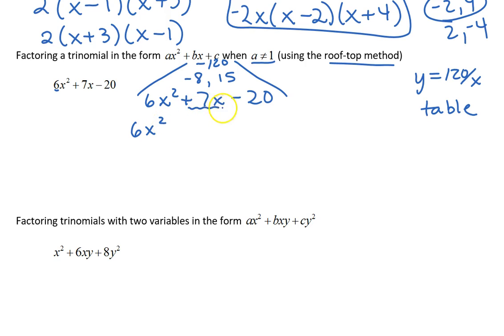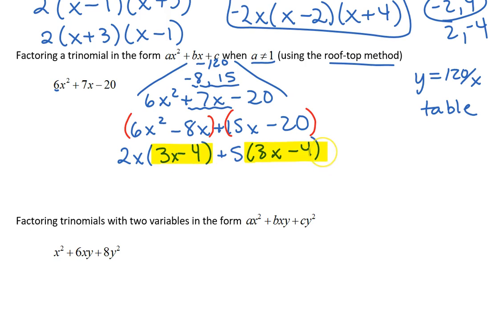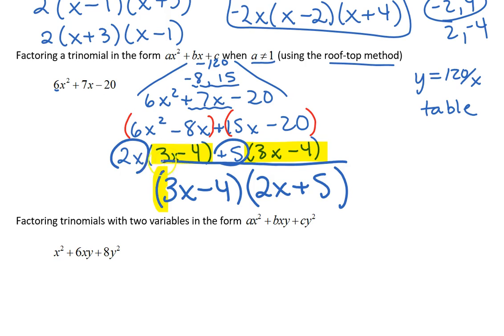So we write 6x², and instead of writing 7x we write -8x+15x minus, and then bring down your -20. Then we can group our first terms and our last terms and we look for a common factor. 6x² and 8x have a 2x in common, leaving you with 3x-4, plus 15x and 20 have a 5 in common, leaving us with 3x-4. That's what we wanted to see. Those two binomials are identical, so we can factor out the binomial. So (3x-4)(2x+5). There you go.